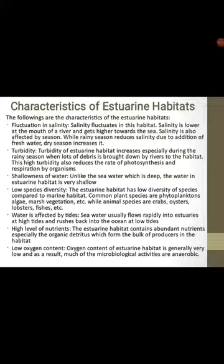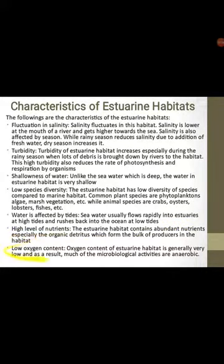Common animal species are crabs, oysters, lobsters, and fishes. The number of organisms in the estuarine habitat is not much compared to marine habitats. Water is also affected by tides, and we have a high level of nutrients. Lastly, we have low oxygen content — so the estuarine habitat has low oxygen content.